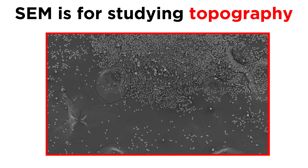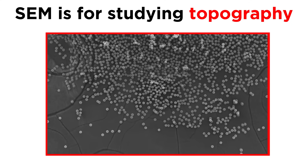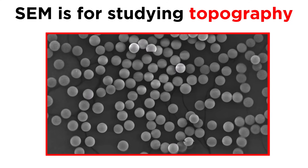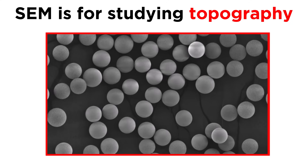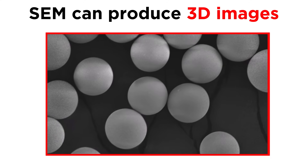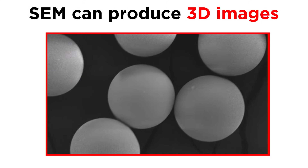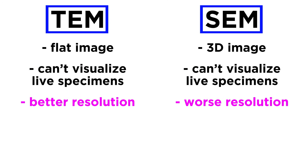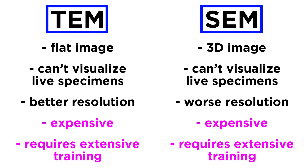SEM imaging is primarily used to study the topography of cells and other similar structures. With this type of microscopy, researchers are able to investigate the depth of structures, which isn't possible with TEM, as SEM produces a 3D image opposed to the flat image from TEM. Yet, just like TEM, SEM cannot visualize live specimens, and SEM has worse resolution than TEM. Both TEM and SEM are expensive and require a lot of training, so they are not likely to be used apart from those pursuing a microbiology career.